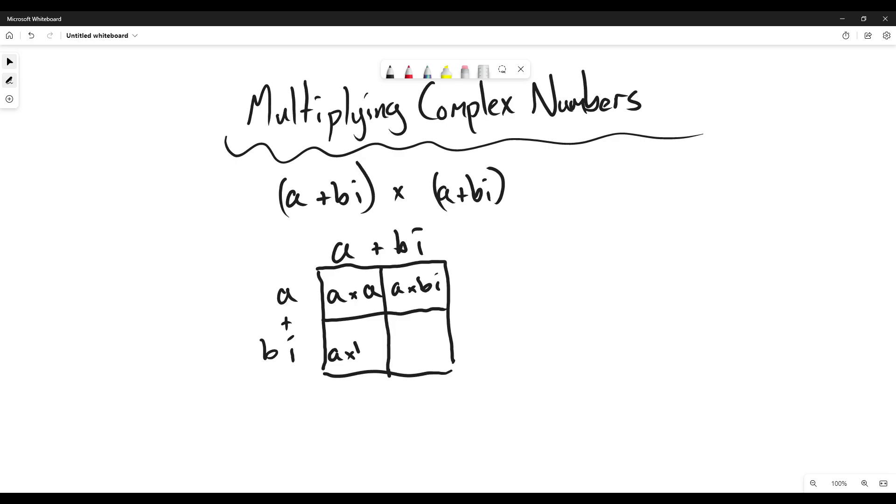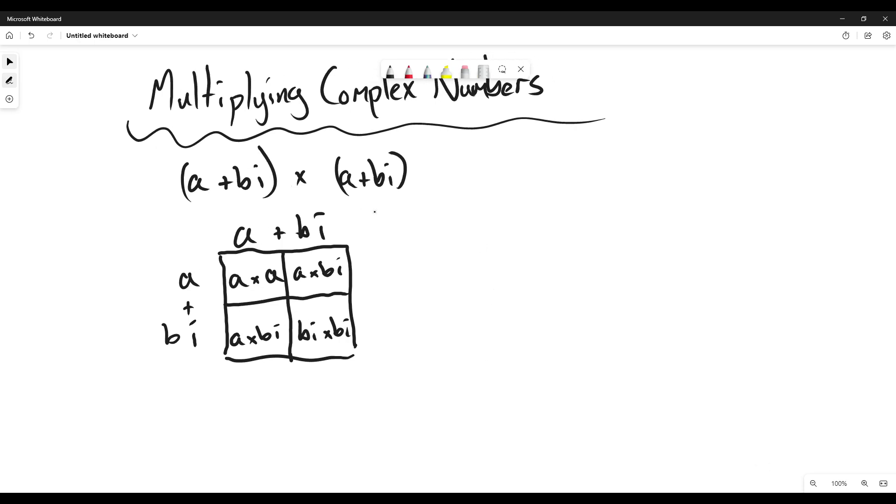a times bi and bi times bi. So let's put an example. When you do this you would add all of these together and find like common units and everything like that.